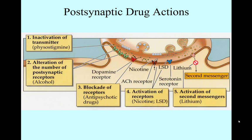Number three is blockade of receptors — we can block receptors, and we have several drugs that do that. Antipsychotic drugs typically block dopamine, and that's the way they act to prevent psychotic events in people who suffer from schizophrenia and such.